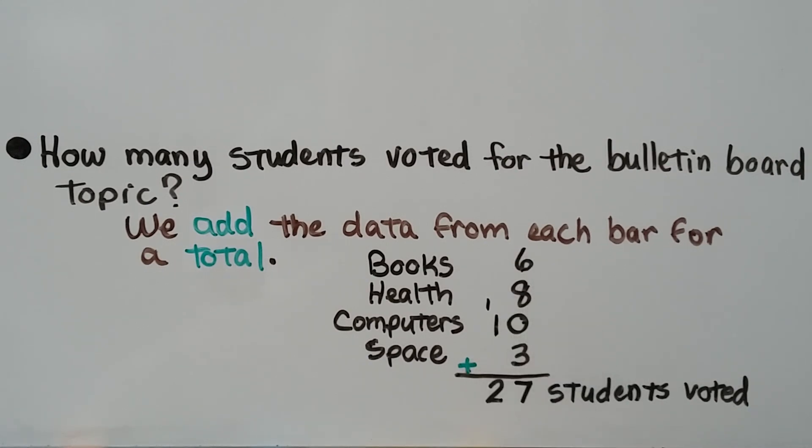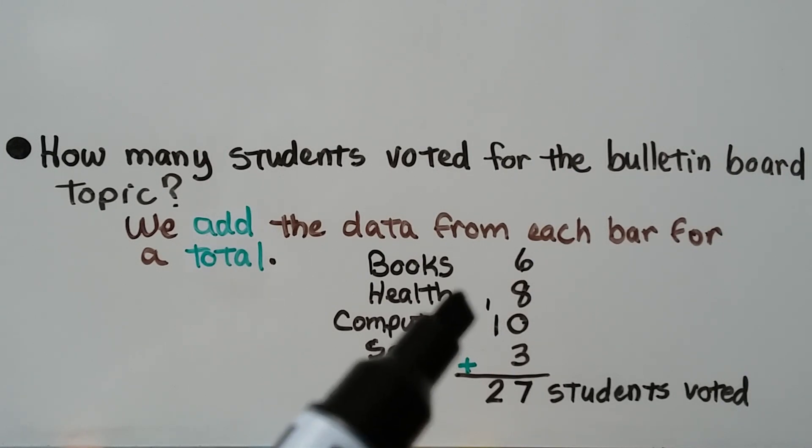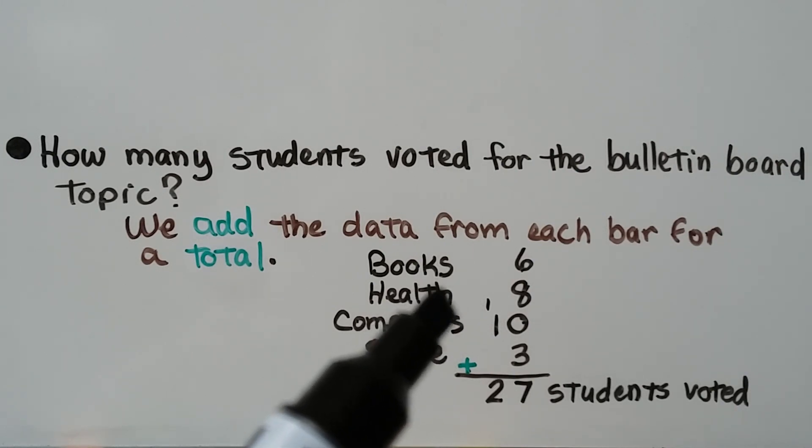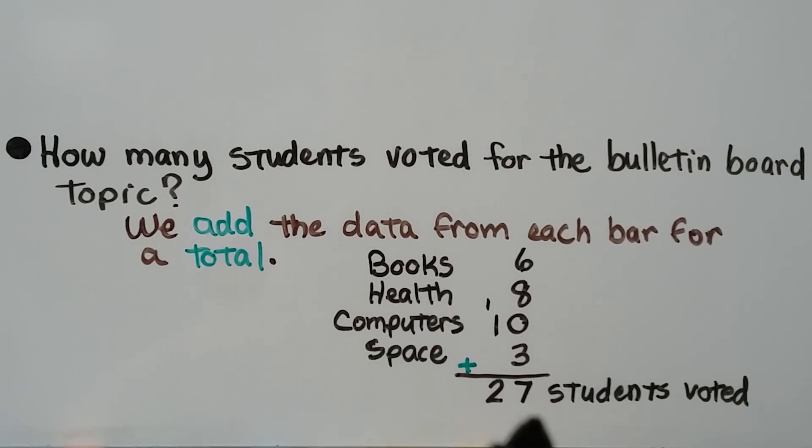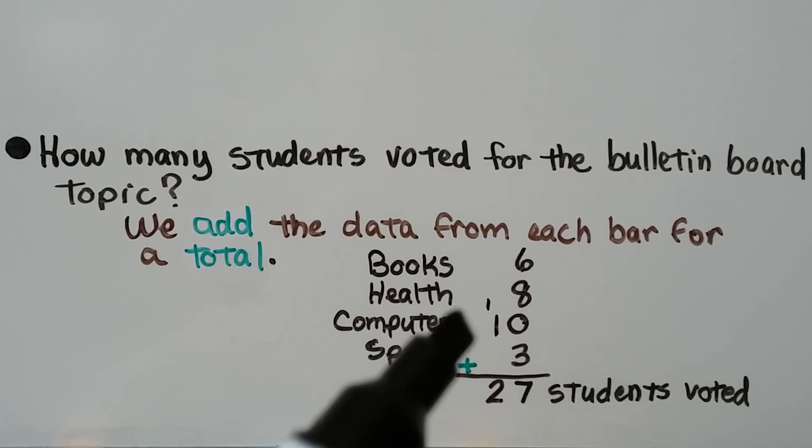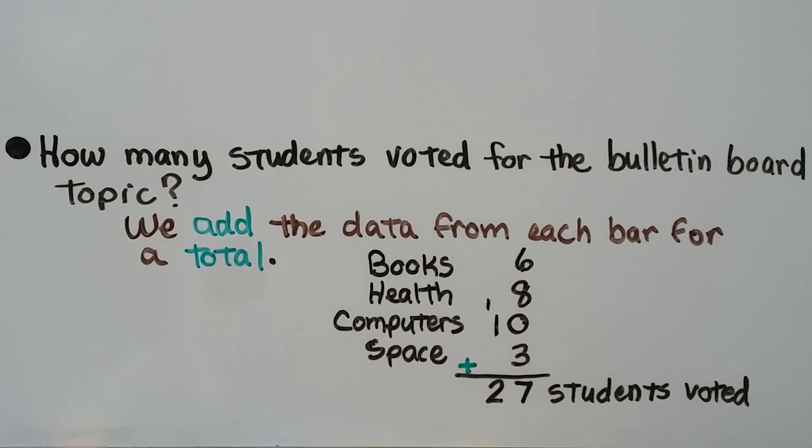Eight plus six is fourteen, plus three more is seventeen. That's one ten and seven ones. We regroup the ten to the tens place and put the seven in the ones place. We add 1 + 1 for the tens. We get twenty-seven students voted.